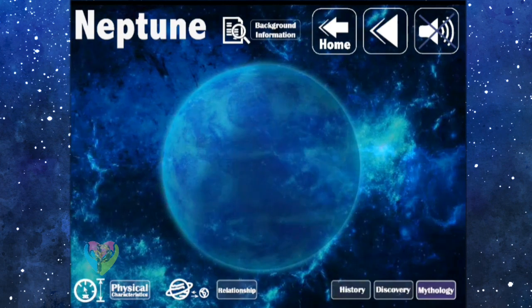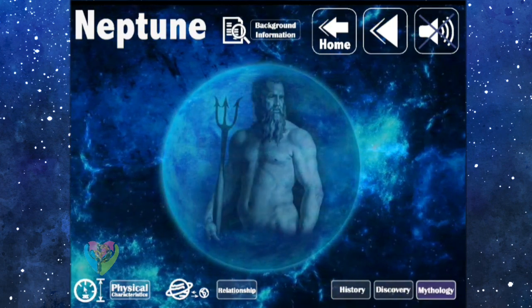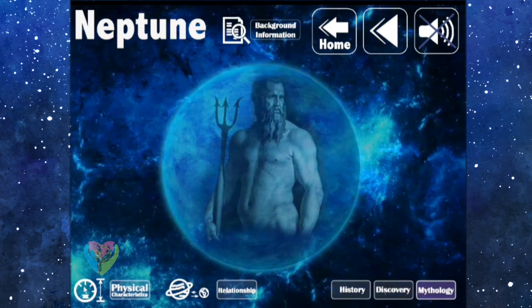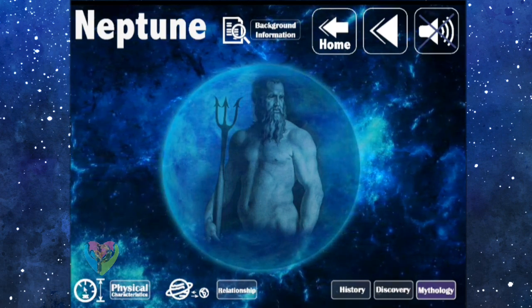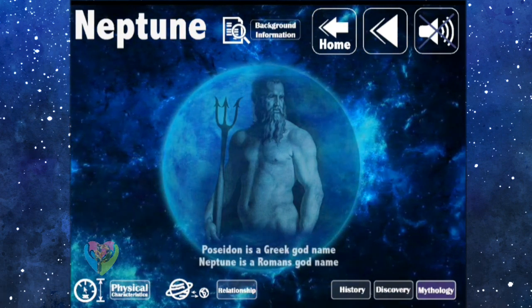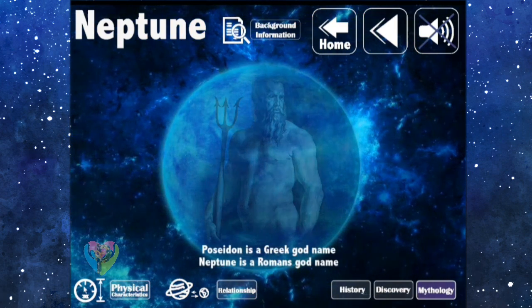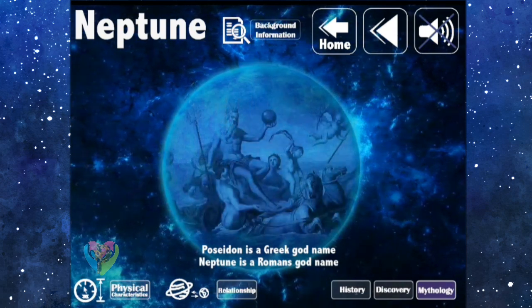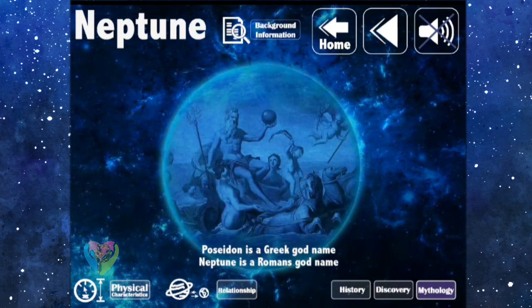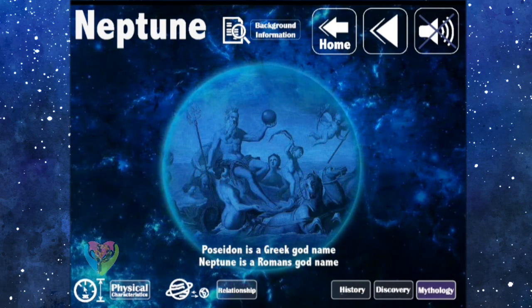Mythology: Poseidon is a Greek god name. However, for the Romans, the Greek culture called their god Neptune. Poseidon was the god of the sea and water. He was one of the brothers of Zeus, or Jupiter in Latin. His wife was Amphitrite, a sea goddess.